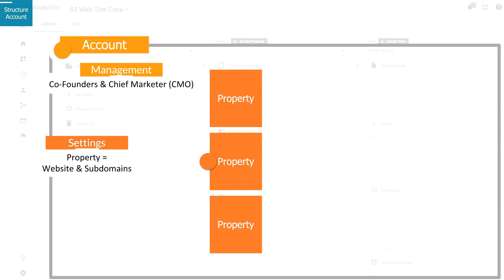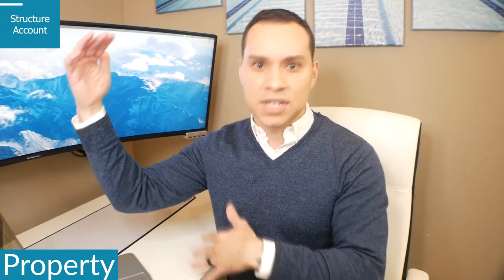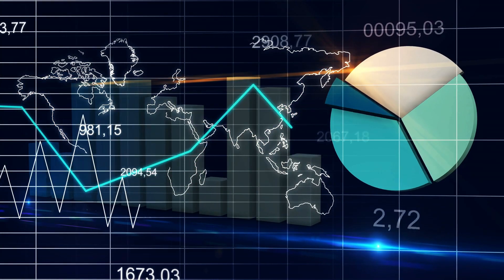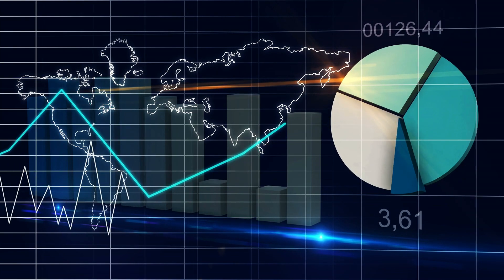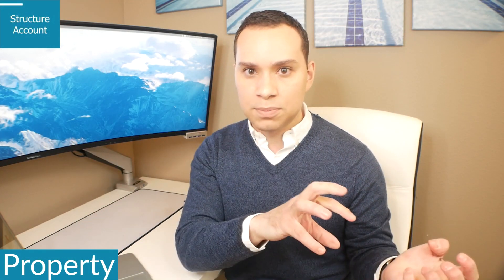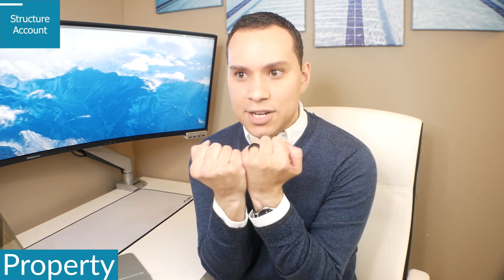When it comes to your property settings, this is where you add your individual websites. If you have one company with multiple websites, add all of them. If you have multiple companies with multiple websites, make sure all your properties relate to the same company or project — you don't want five or six different projects inside one account. At the property level, you'll also get your tracking code, which is what we'll use to install Google Analytics, and you can connect your Google Ads and AdSense accounts.